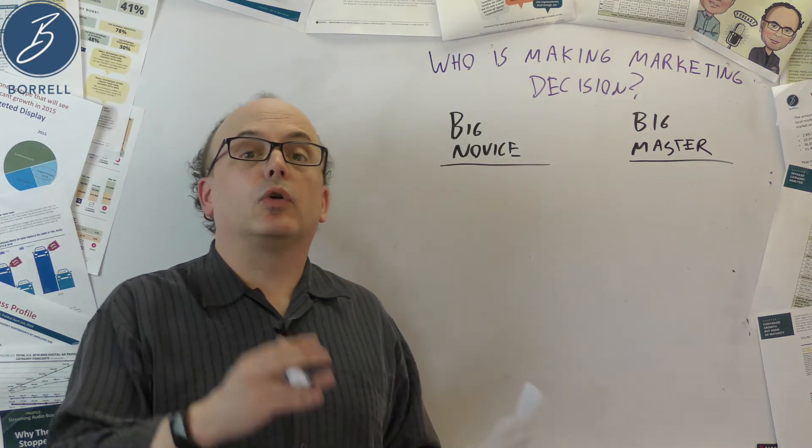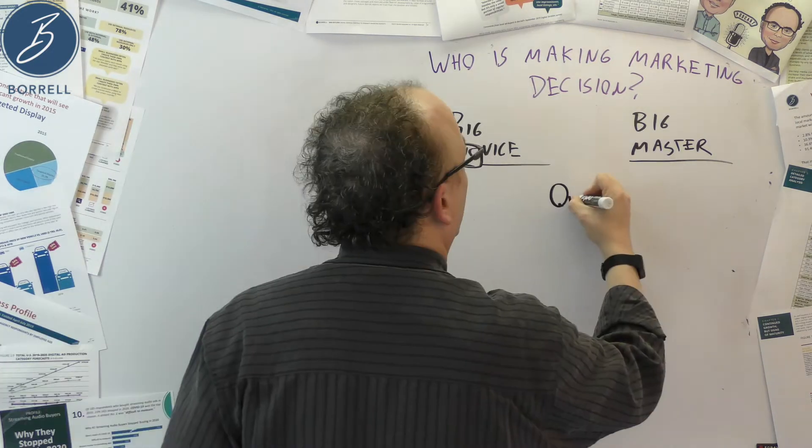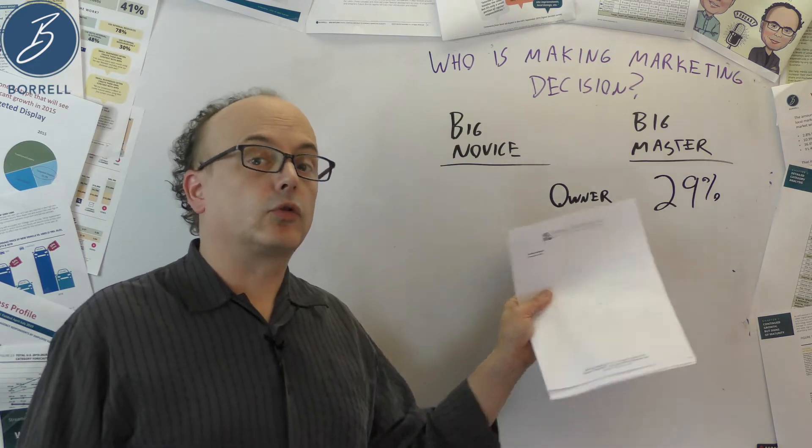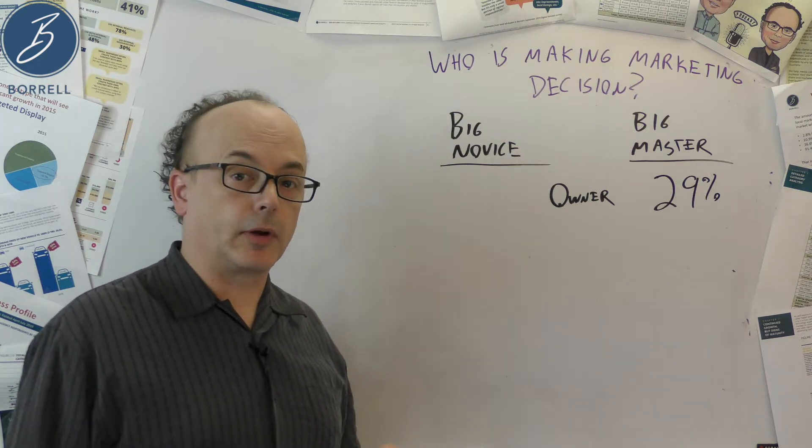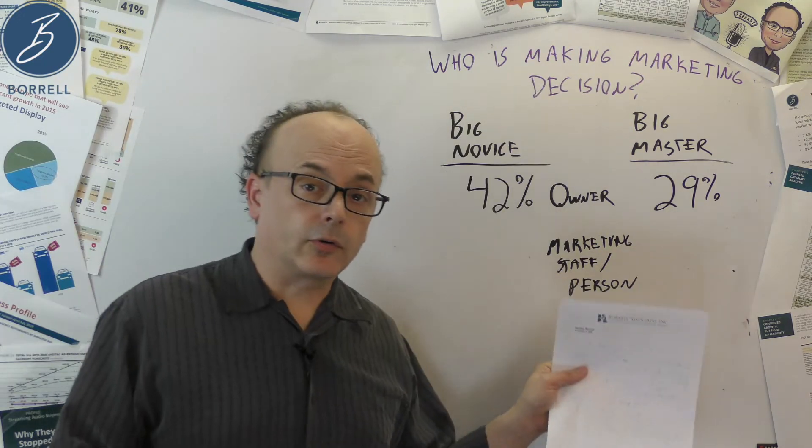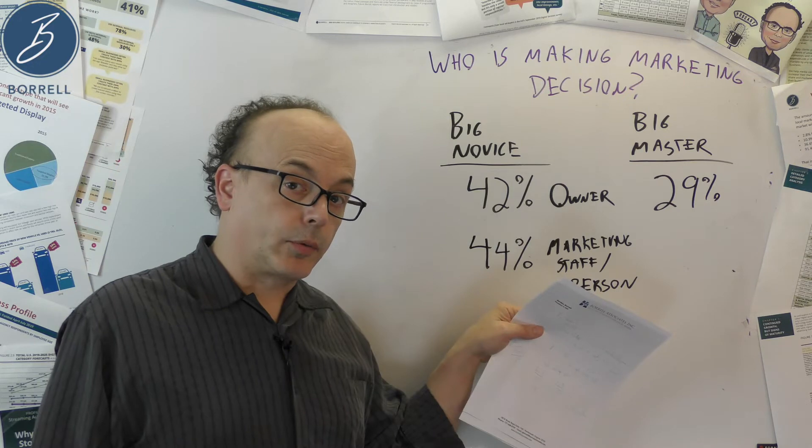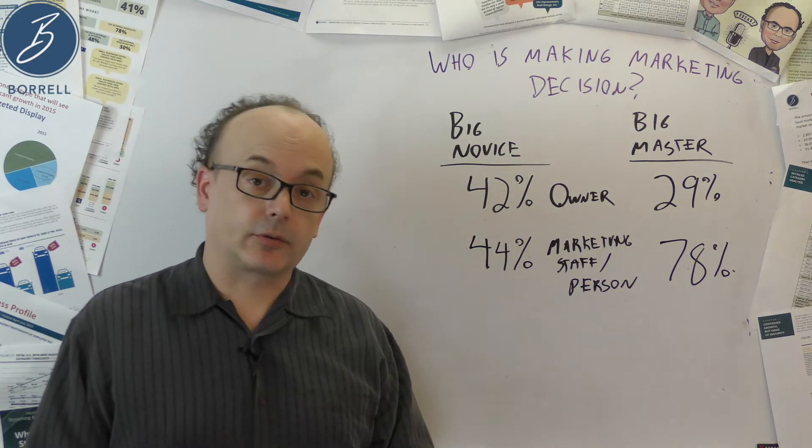I think it has everything to do with who these big novices are compared to the big masters. So we asked for your company, who is making the marketing decision? And there were some differences between these two groups. One choice was owner of the company. In big masters, 29% said the owner of the company is making their marketing decisions. In big novices, 42%. Conversely, not really conversely, but differently, marketing staff or person, 44% for big novices, 78% for big masters.